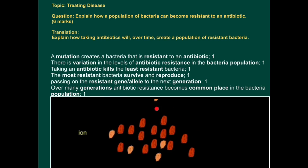Resistant bacteria such as these are good evidence for natural selection and evolution, because natural selection and evolution is just saying that over time, the frequency of a certain characteristic in a population will change.